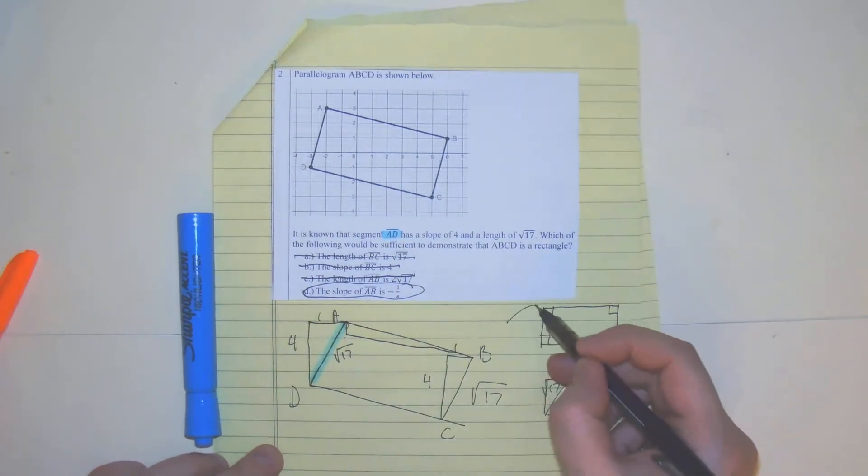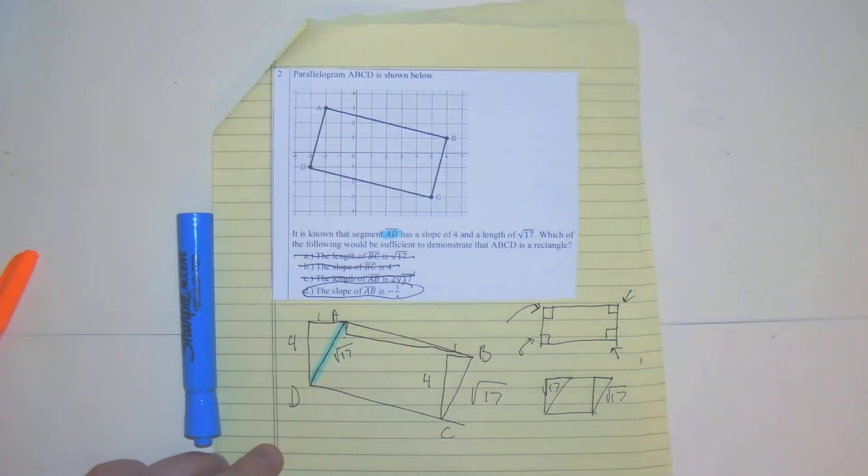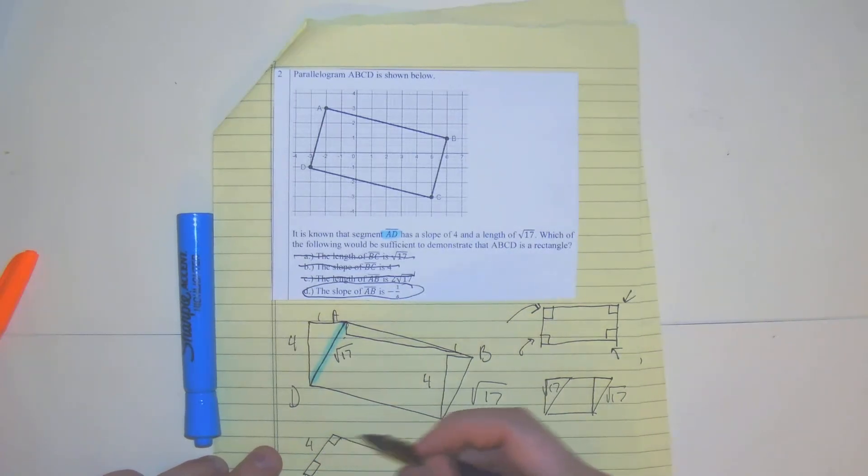So the one that makes sense here is negative one-fourth because the defining characteristic of a rectangle is there's four right angles. So right here, what that's saying basically is that right angles are being formed between all the sides.